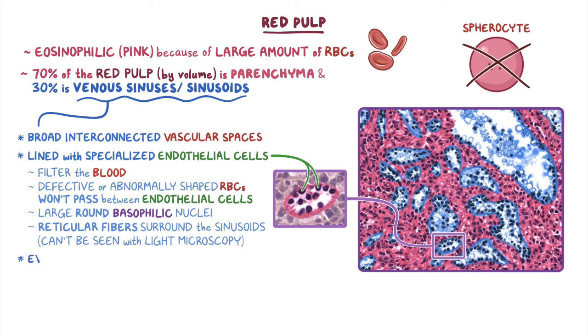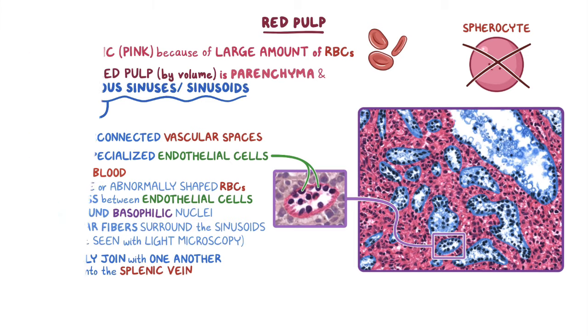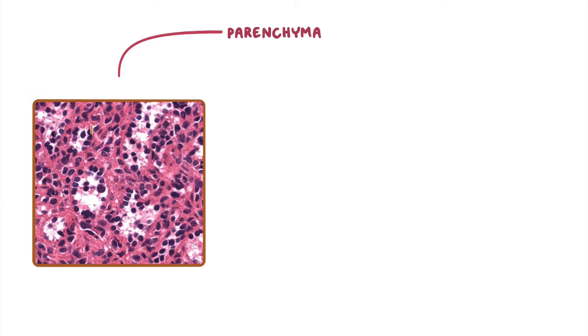The venous sinuses will eventually join with one another and drain into the splenic vein. Because of the size of the venous sinuses, the parenchyma of the red pulp actually looks like cords under the microscope, which is why they're also called cords of Billroth. Although if the red pulp was seen in three dimensions, it would actually look more like a piece of Swiss cheese, with the holes representing the sinusoids and the cheese representing the parenchyma.